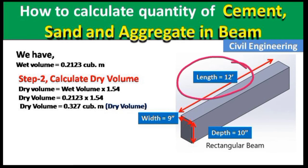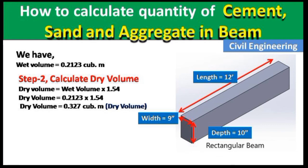So we need 2 bags of cement to construct a beam of length 12 feet, width 9 inches, and depth 10 inches. That's all for today. Please like this video and subscribe to my channel for new updates about civil engineering. Thank you.